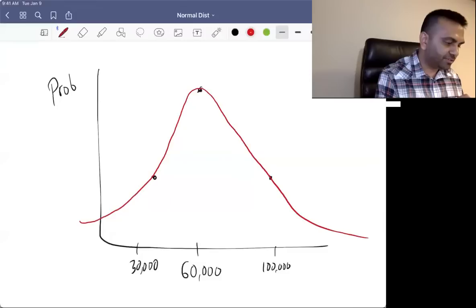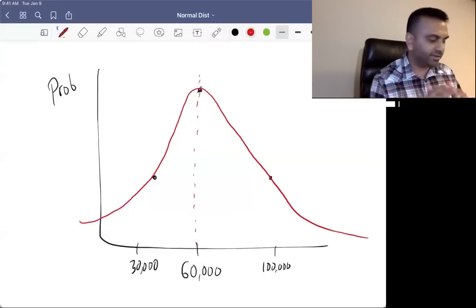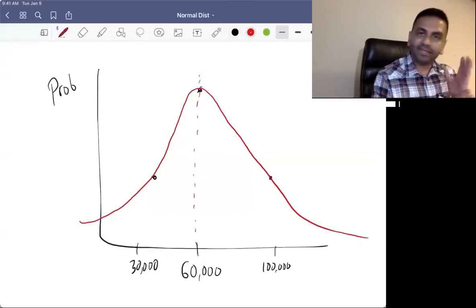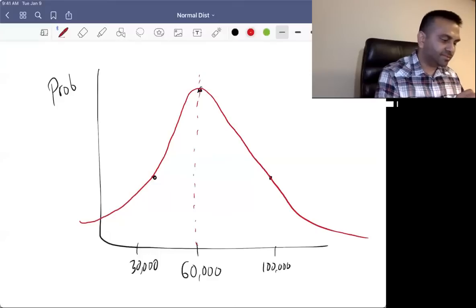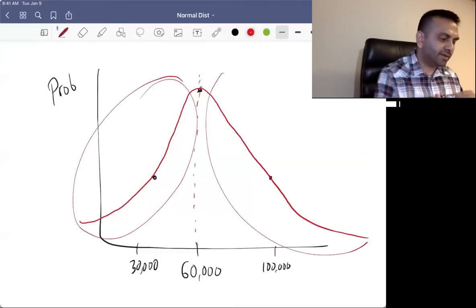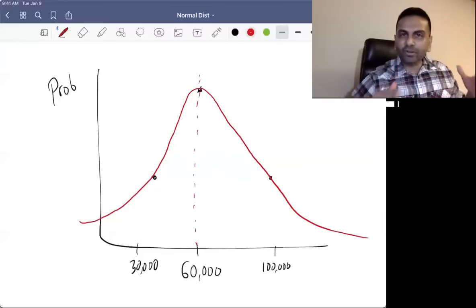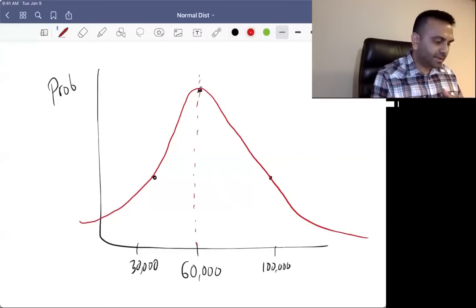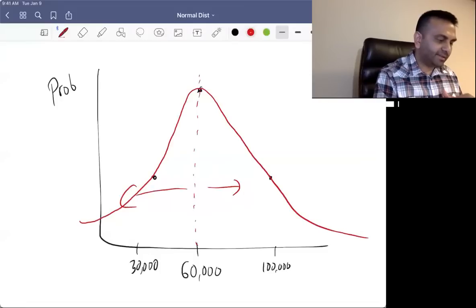And essentially, the features of the bell curve are that the median, the middle value, is the mean, meaning the average, and that it's symmetric, meaning values to the left and the right, the distribution looks the same on the left and the right. You're equally likely to be $40,000 above as you are to be $40,000 less than the average.